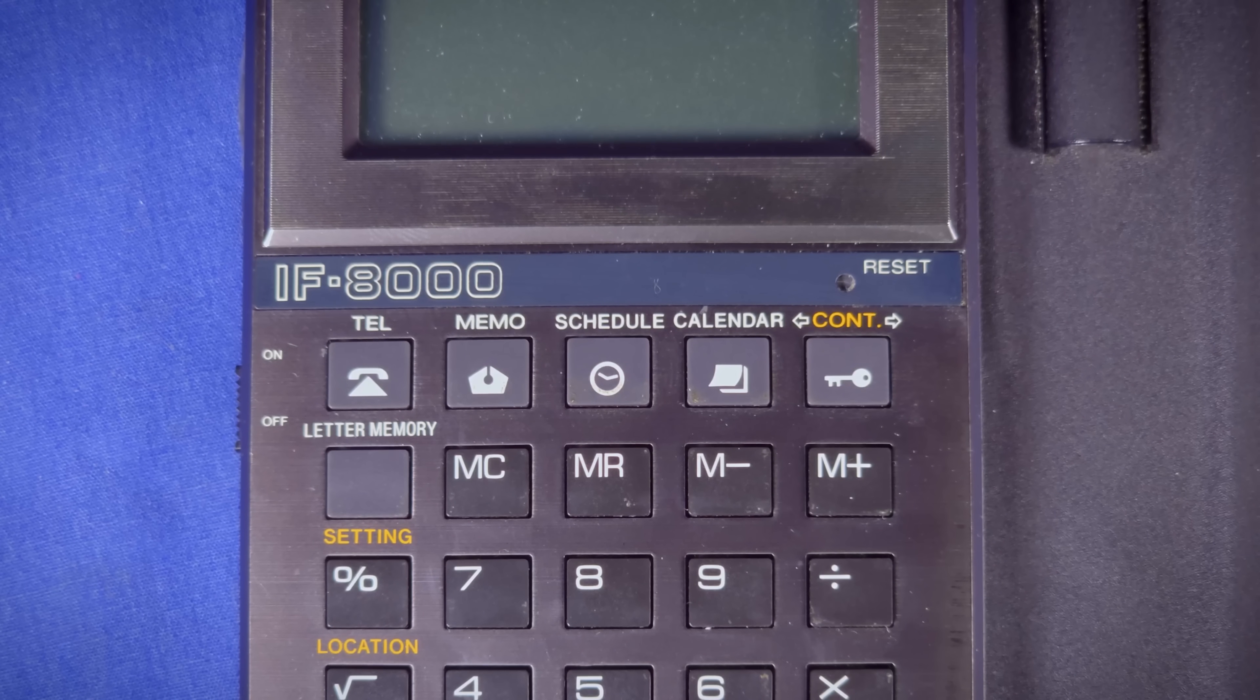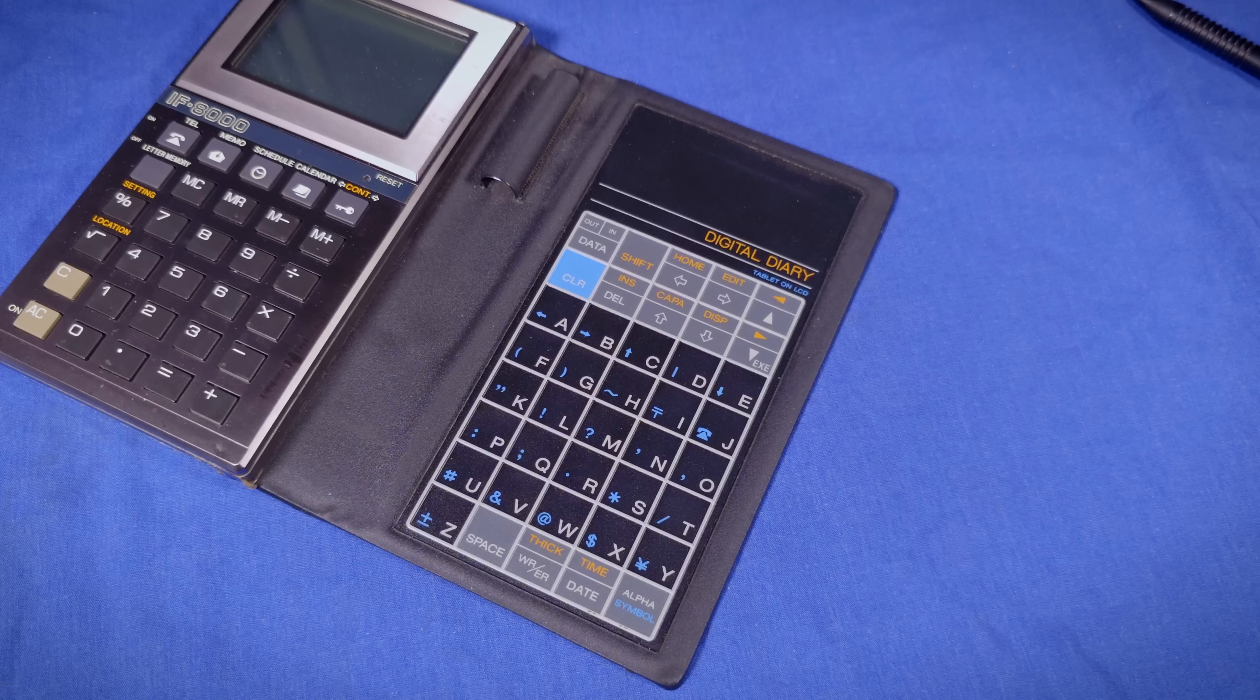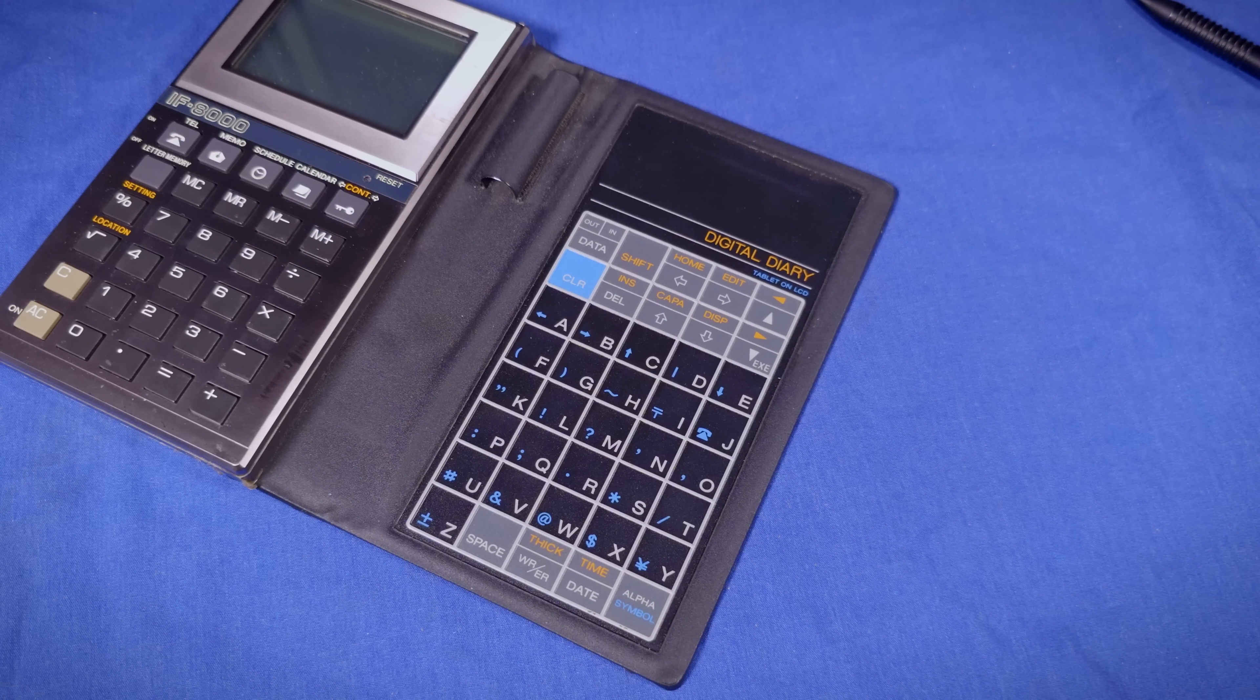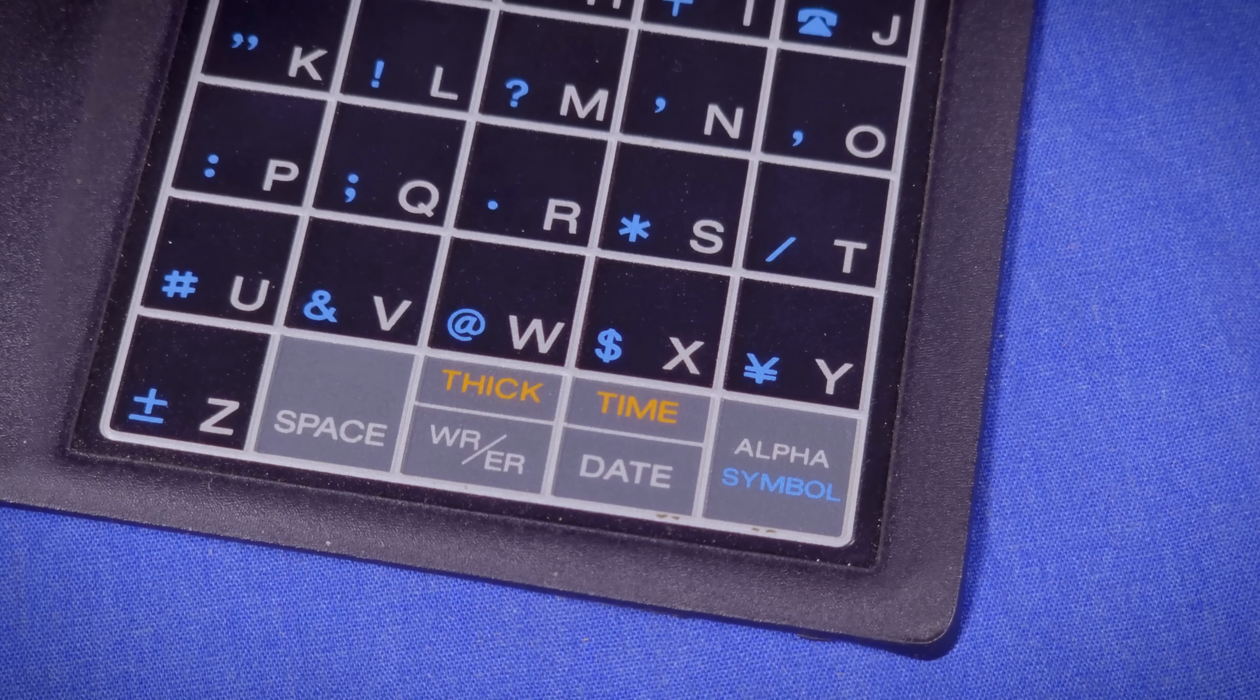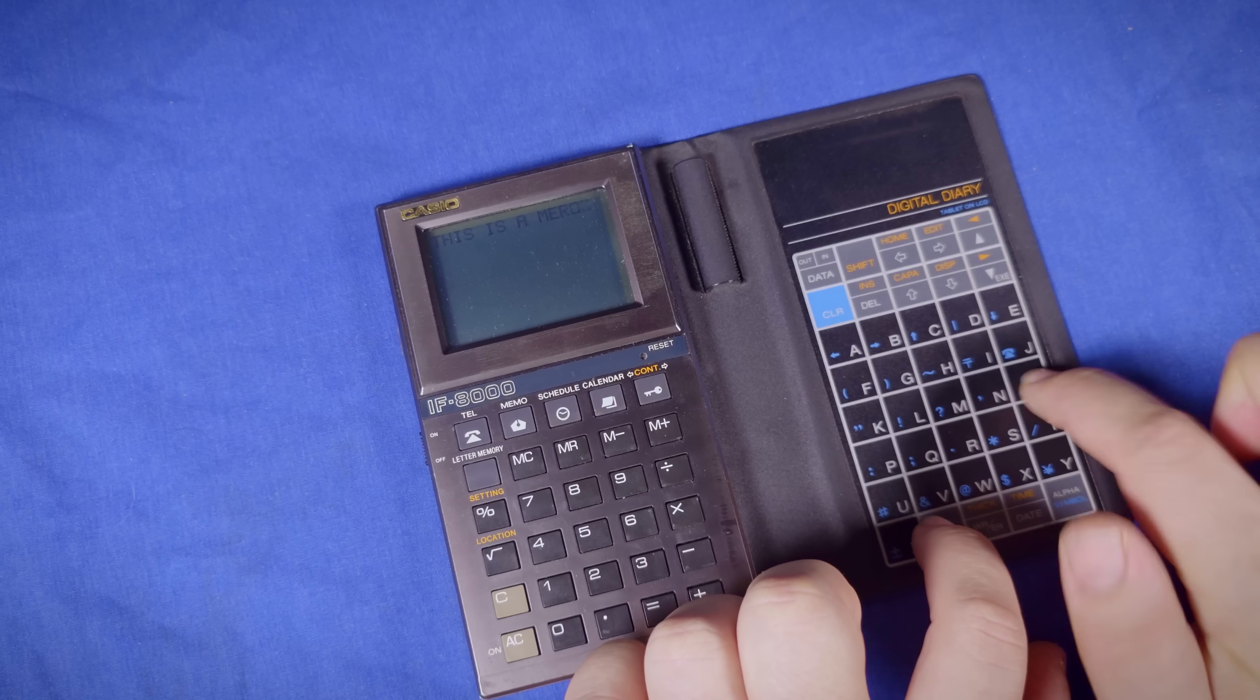Now the IF8000 really only has three other modes in the calculator, a phone book, memo pad, and calendar. The calendar can just also be viewed as a schedule. In all modes, the buttons in the cover serve as a keyboard for inputting data. It also has two modifier keys, shift which is for the actions and modes, and alpha symbol for changing the characters the keyboard inputs.